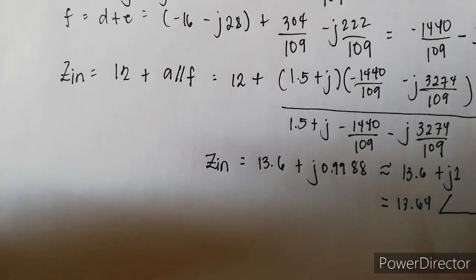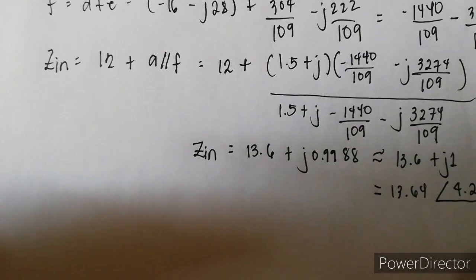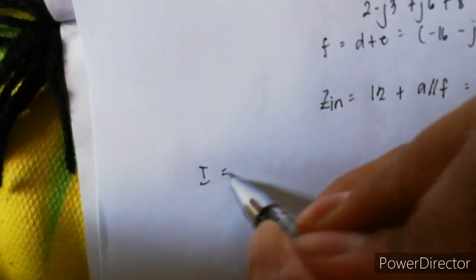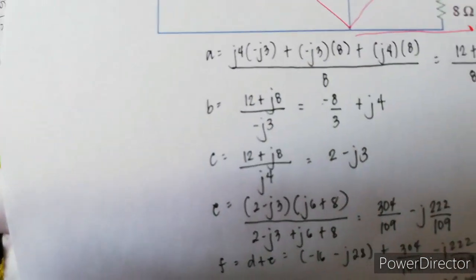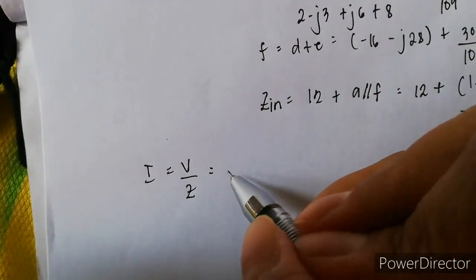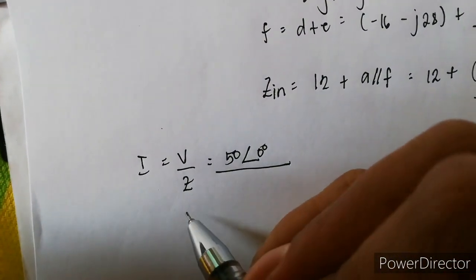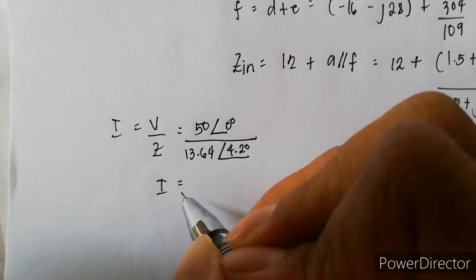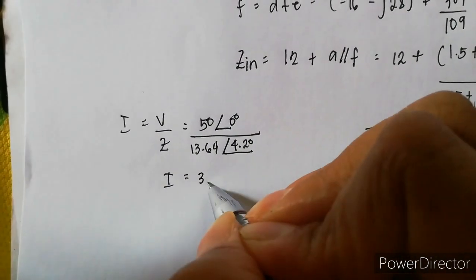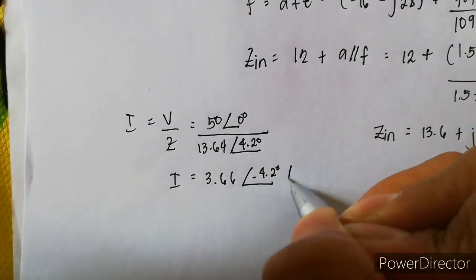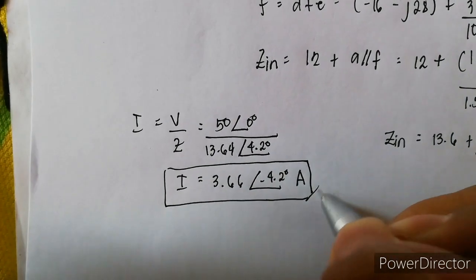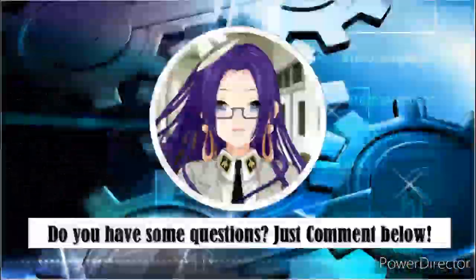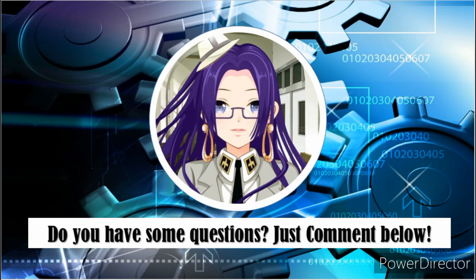Converting to polar form: Z_in = 13.64∠4.2°. Using Ohm's law, the current is I = V/Z = 50∠0° / 13.64∠4.2° = 3.66∠−4.2° A. That's it for today. If you have any questions, comment below. Thank you for watching.